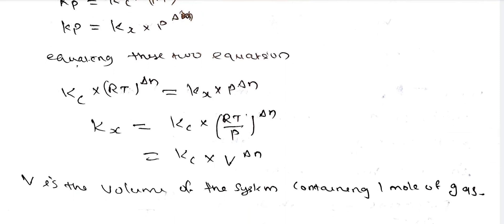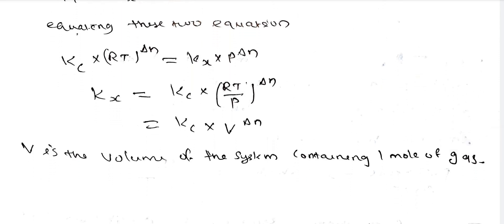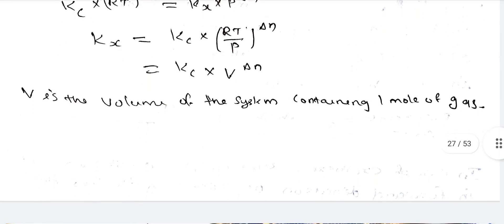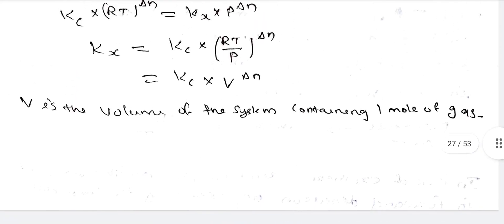We arrive at: Kc times RT all raised to delta n equals Kx times P raised to delta n. Therefore Kx is equal to Kc times (RT divided by P) all raised to delta n. Here, Kx equals Kc times V raised to delta n, where V is the volume of the system containing one mole of gas.